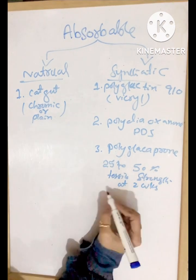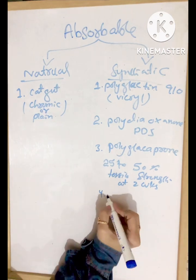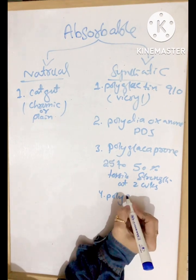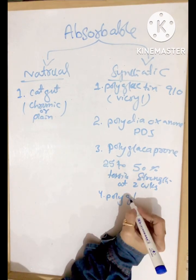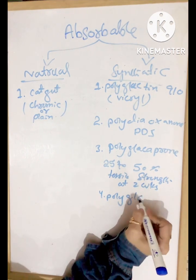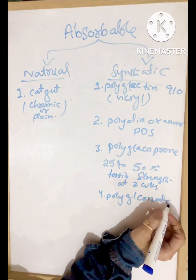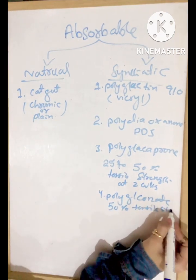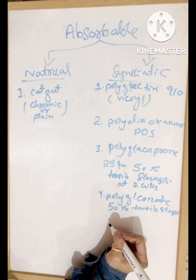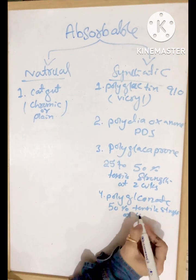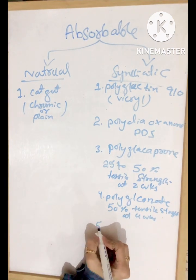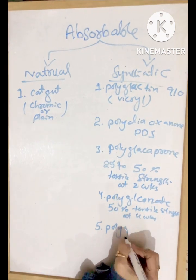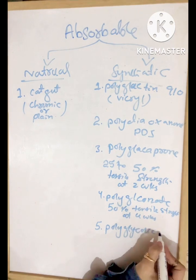At two weeks. Number four is polyglyconate, which has 50 percent tensile strength at four weeks. Number five is polyglycolic acid.